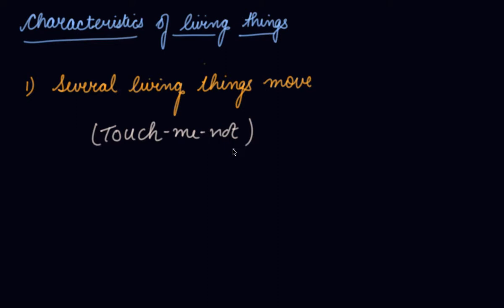Movement is also visible in other plants. Like the leaves of kachinar, or the flowers of lotus, water lily, sunflower — the petals of sunflower — you will see that they are not moving from one place to another, but they are moving at their own place. So several living things move.